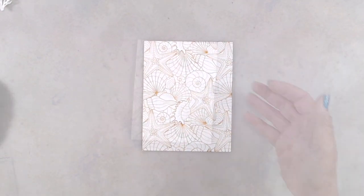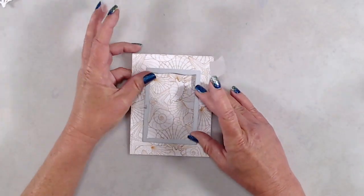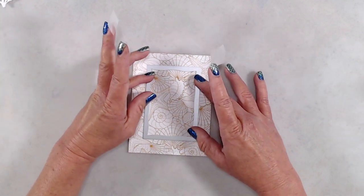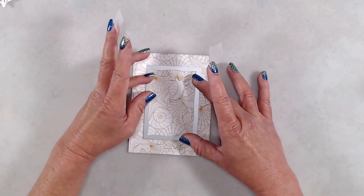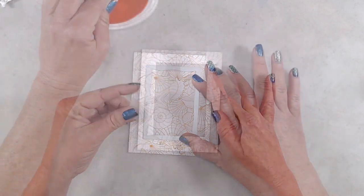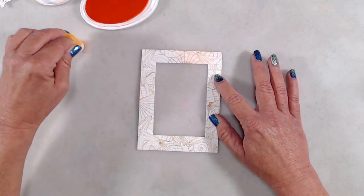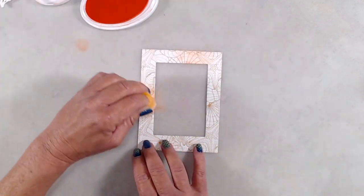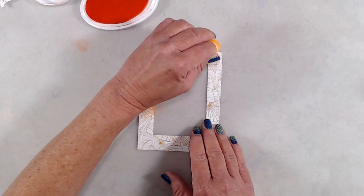Once I had that panel stamped, I used the wonky stitched rectangles die and cut the window out of my shaker panel, and then I ran it through again with the largest wonky stitched rectangle die, so the frame would measure four and five and a quarter inches.